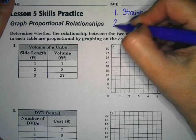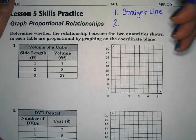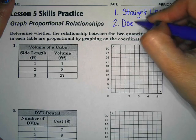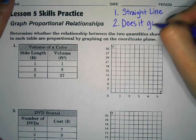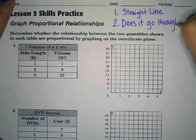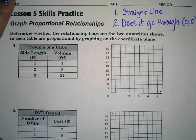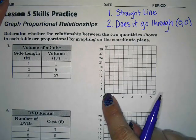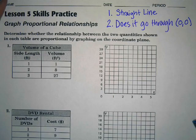The second thing you're looking for is does it go through the origin? So you may want to write that at the top of your page as well and remember the origin is the point zero zero. So it's the zero zero point on your graph. So those are the two things we're looking for.